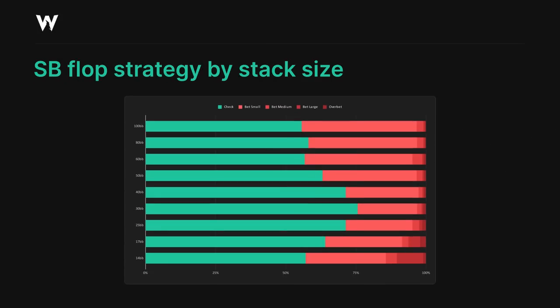First, a breakdown of the small blind's flop strategy in limped pots. There's an interesting trend regarding the small blind's aggression. They're betting flops less than half the time overall in limped pots, but in particular they're doing it even less often at the stack sizes where the small blind's preflop strategy was more centered around raising with a lot of their strongest hands.